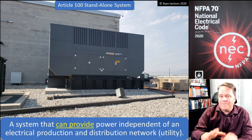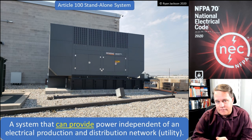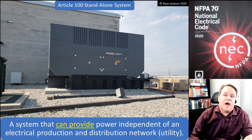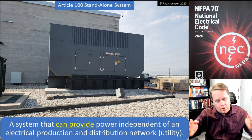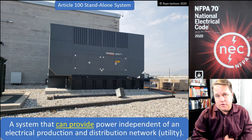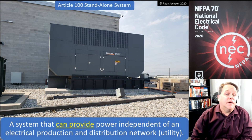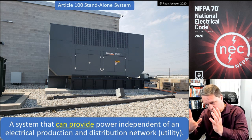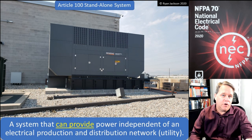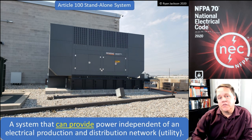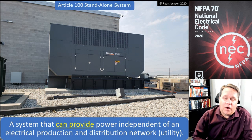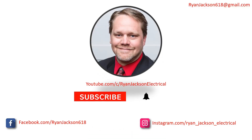Ultimately, you have an interactive system — like solar PV — where you're working together in parallel with a different source. And then you have a standalone system, which is where you're not. That would be your interactive system and your standalone system, at least as written for the 2020 NEC.